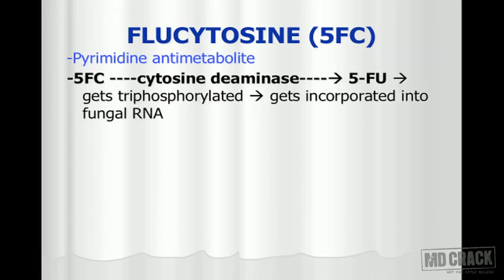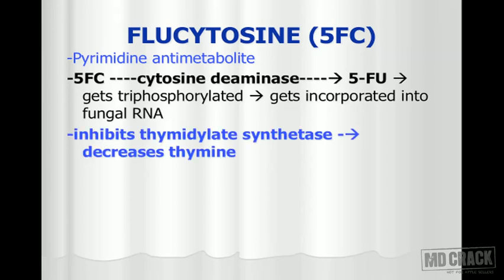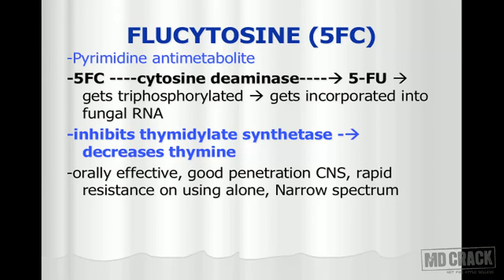5-FC is a pyrimidine anti-metabolite. It gets converted by the enzyme cytosine deaminase into 5-FU (5-fluorouracil). 5-FC is not active on its own; it must be converted to 5-FU, which then needs further activation — it must be triphosphorylated. Once triphosphorylated, it gets incorporated into fungal RNA and inhibits thymidylate synthetase, ultimately inhibiting thymidine synthesis.